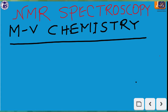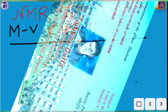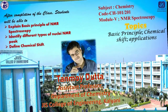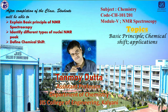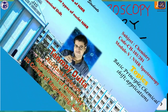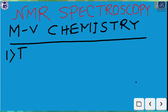Hi students, today I will give you a brief idea of NMR spectroscopy. NMR spectroscopy is included in the fifth module of the chemistry syllabus, and chemistry is included in the first year B.Tech course. The code of chemistry is either CH101 for odd semester or CH201 for even semester. I'm Tanmoy Dutta, Assistant Professor, Department of Chemistry, JISCE College of Engineering, Kalyani. Welcome to my class of NMR spectroscopy. Today we will discuss the basic principle of NMR spectroscopy.